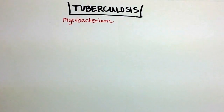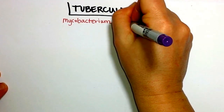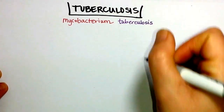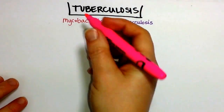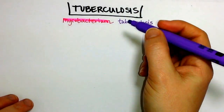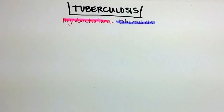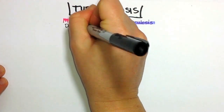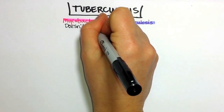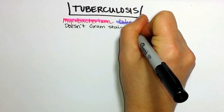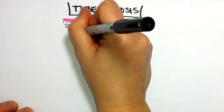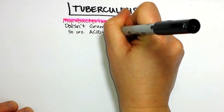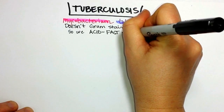Mycobacterium tuberculosis has caused disease for thousands of years. It's hard to gram stain — that's why it's written in pink and purple, because it doesn't stain gram-negative or gram-positive very well. For that reason, we do what's called an acid-fast stain on mycobacterium. It's that waxy coat that makes it hard to gram stain.